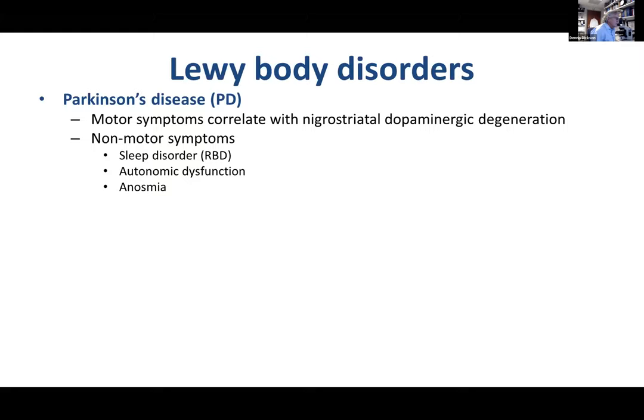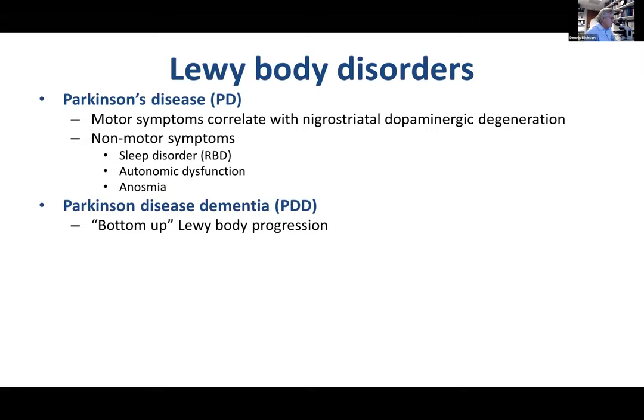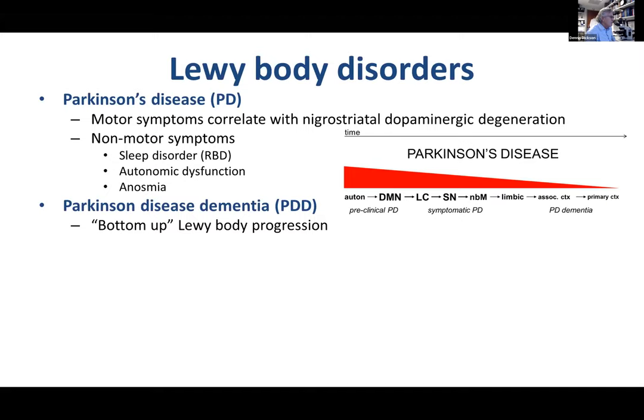Parkinsonism is related to nigrostriatal dopamine degeneration, but there are a lot of non-motor manifestations as well. One of the end stages of the disease process is a dementia syndrome referred to as Parkinson's disease dementia. This can be thought of as a bottom-up progression of Lewy body pathology, where it starts in lower brainstem areas or even in peripheral autonomic nervous system, and progresses through dorsal motor nucleus, locus coeruleus, nigra, basal forebrain, limbic, and then maybe at the very end stages involves primary cortices.